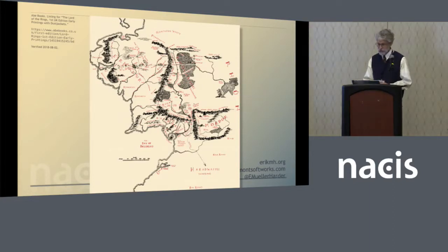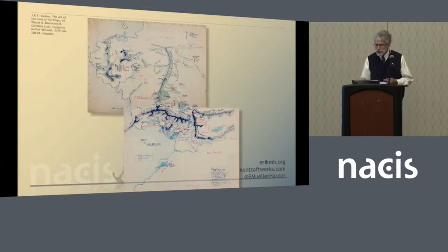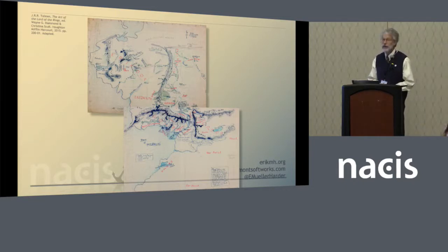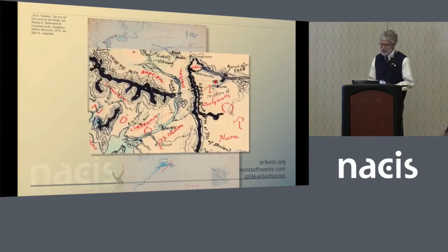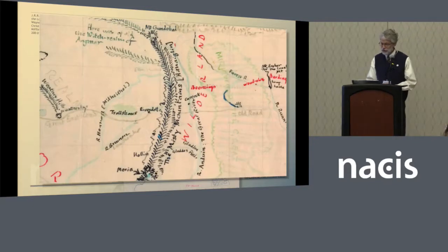Christopher was not, of course, creating the maps out of his head with only the novel for reference. He was, in fact, meticulously copying his father's own working maps, rendering them suitable for publication in two colors. Christopher was primarily copying from Tolkien's final map of Middle Earth. It was drawn in the late 40s, at about the same time that Tolkien finished writing the novel itself. You can see he was struggling with how best to show elevation, with contour lines as in the south, or with mountain symbols that are almost rudimentary hachures, as in the north central area.